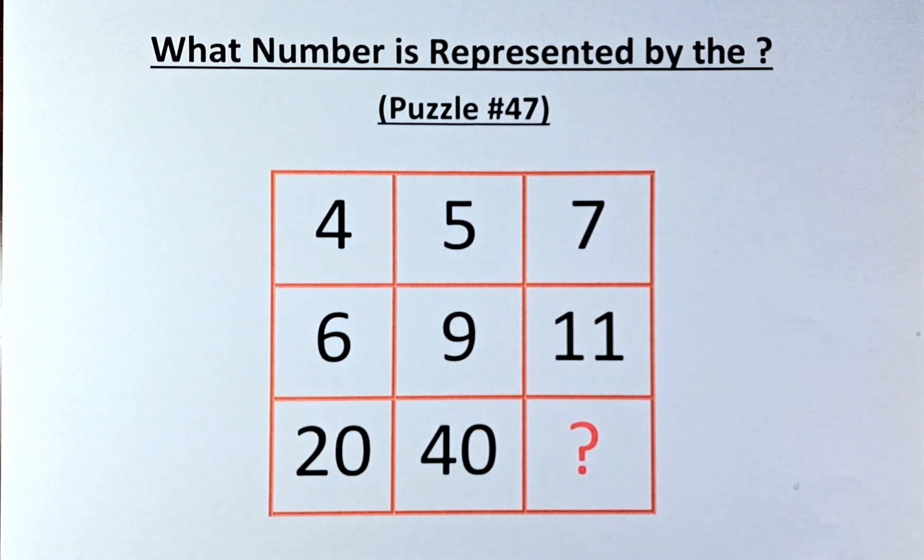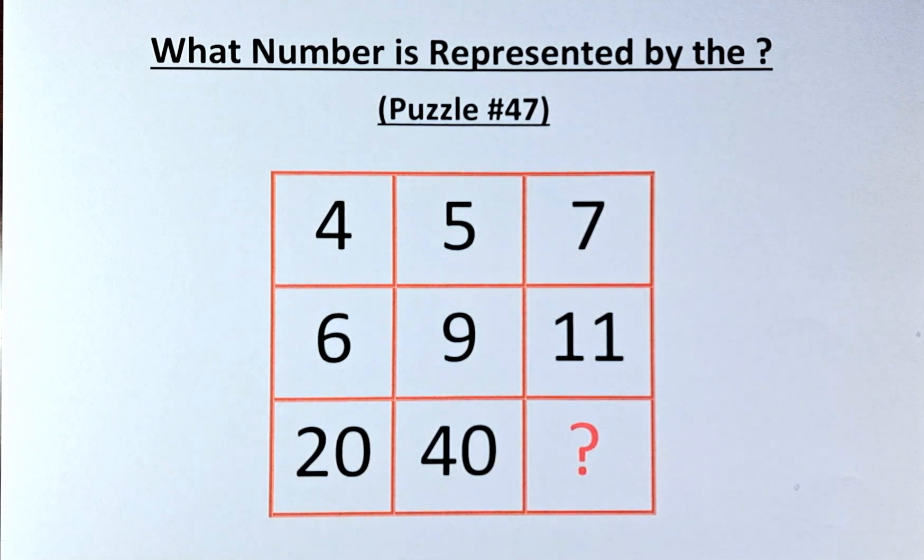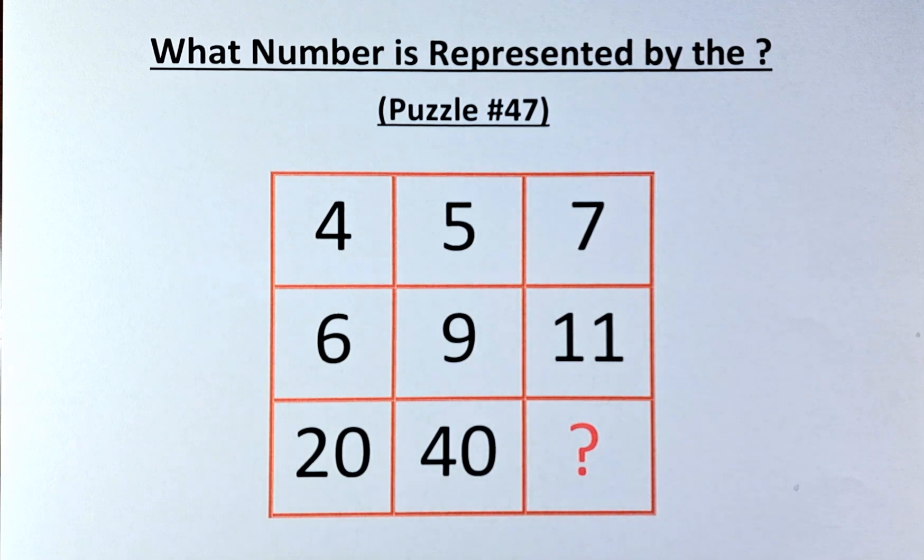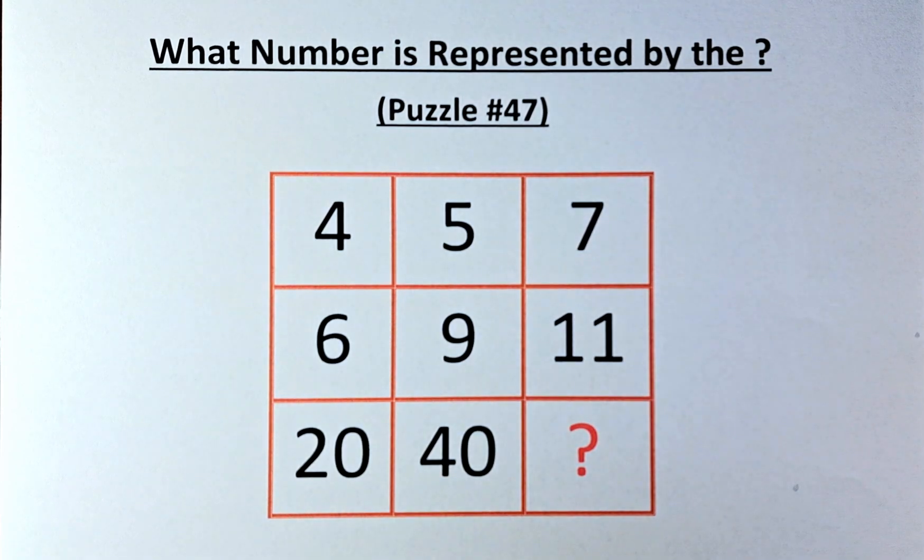Welcome back to the solution of puzzle number 47. What number is represented by the question mark? The numbers in the puzzle are 4, 5, 7 in the first row, 6, 9, 11 in the second row, and 20, 40, and a question mark in the final row.